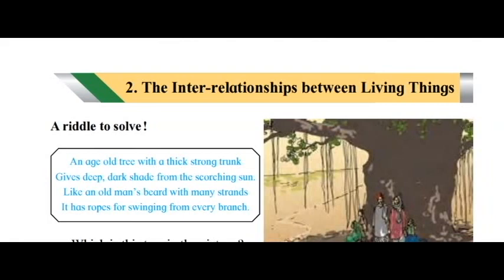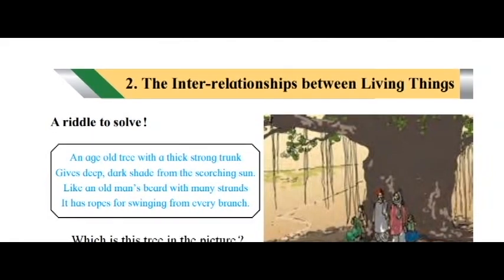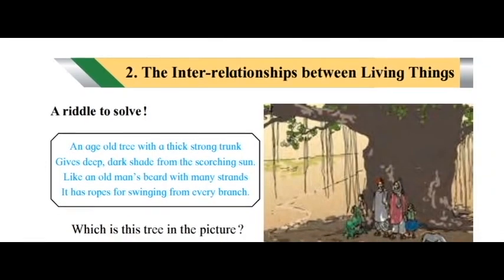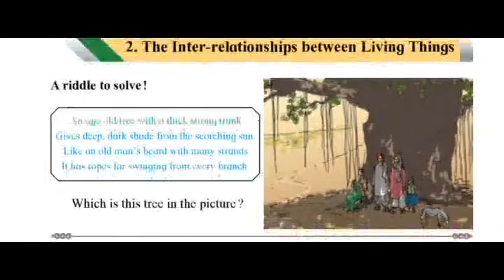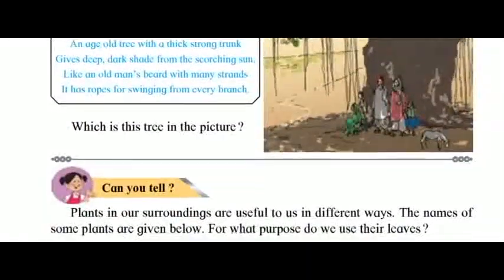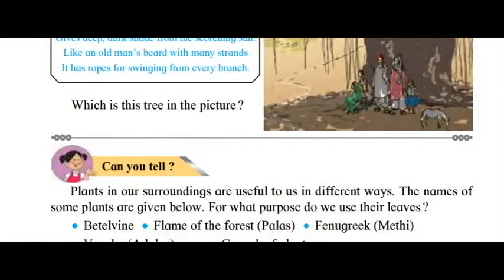The interrelationships between living things — a riddle to solve. An age-old tree with a thick strong trunk gives deep, dark shade from the scorching sun. Like an old man's beard with many strands, it has ropes for swinging from every branch. Which is this tree in the picture? Can you tell?